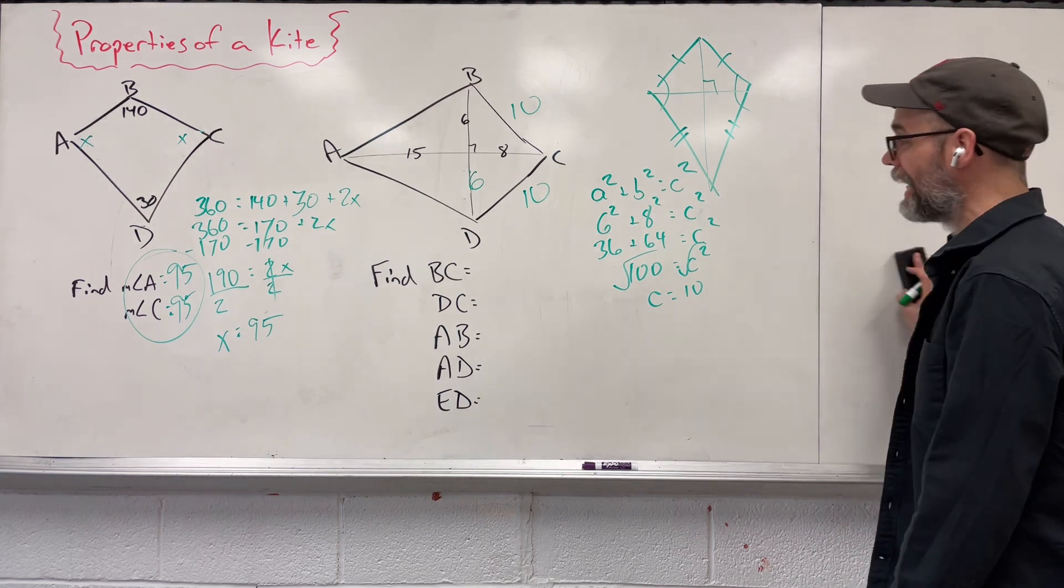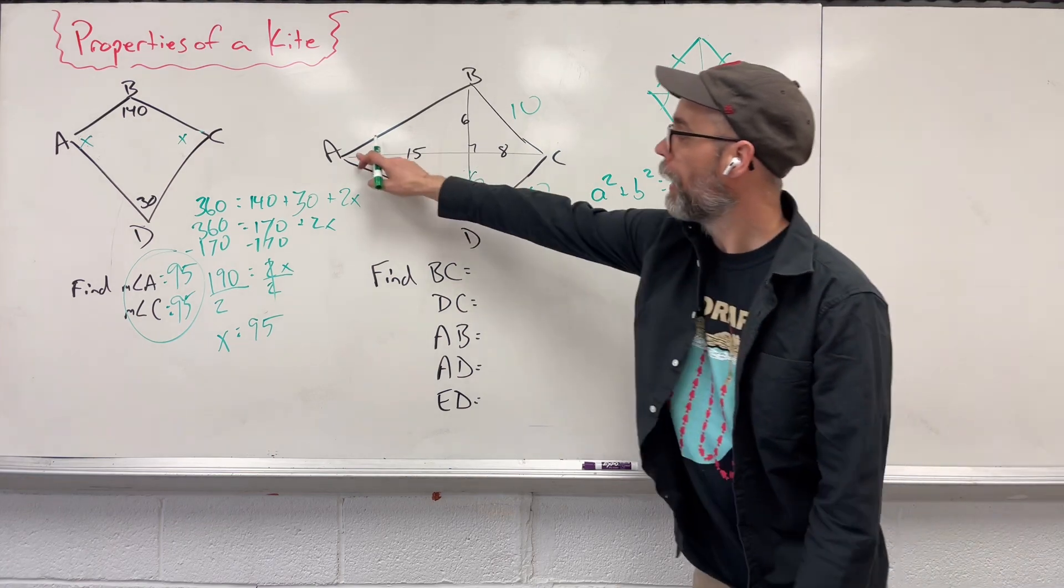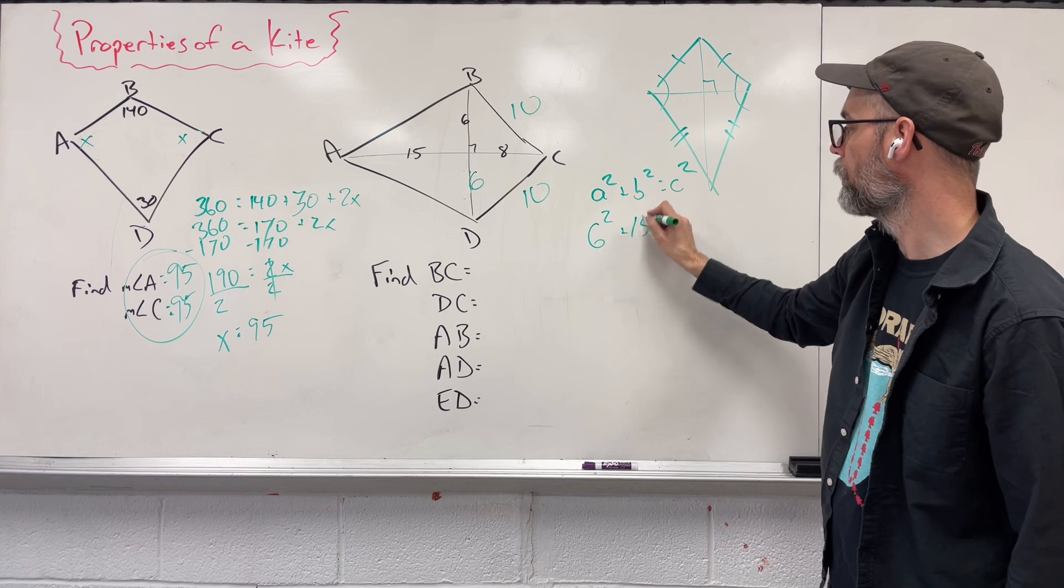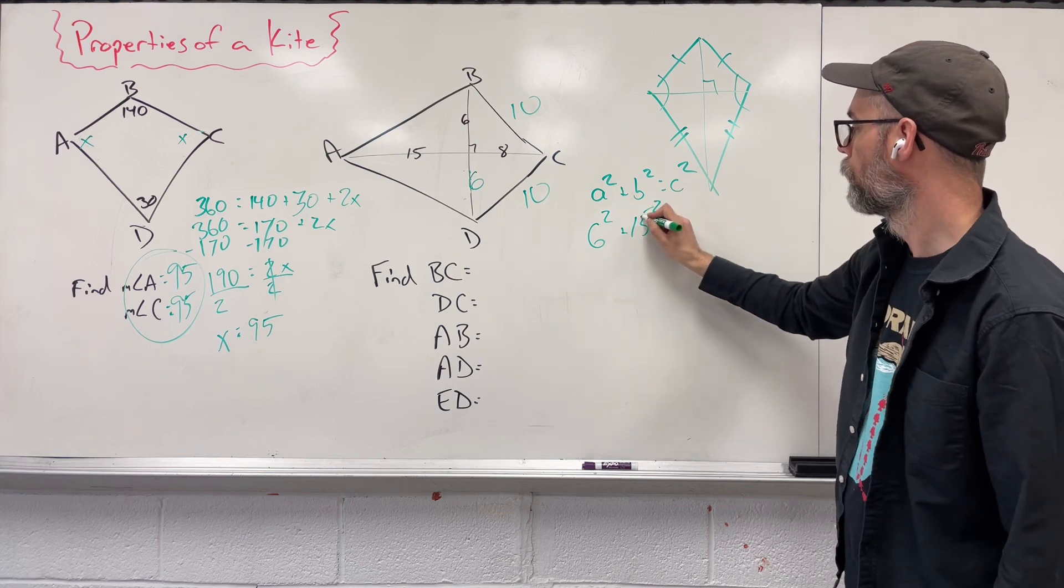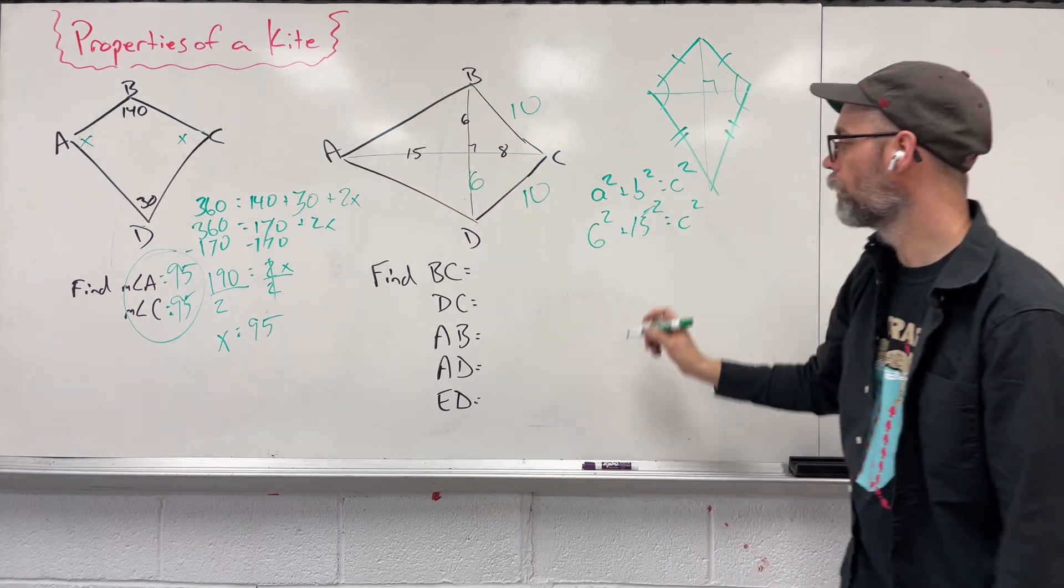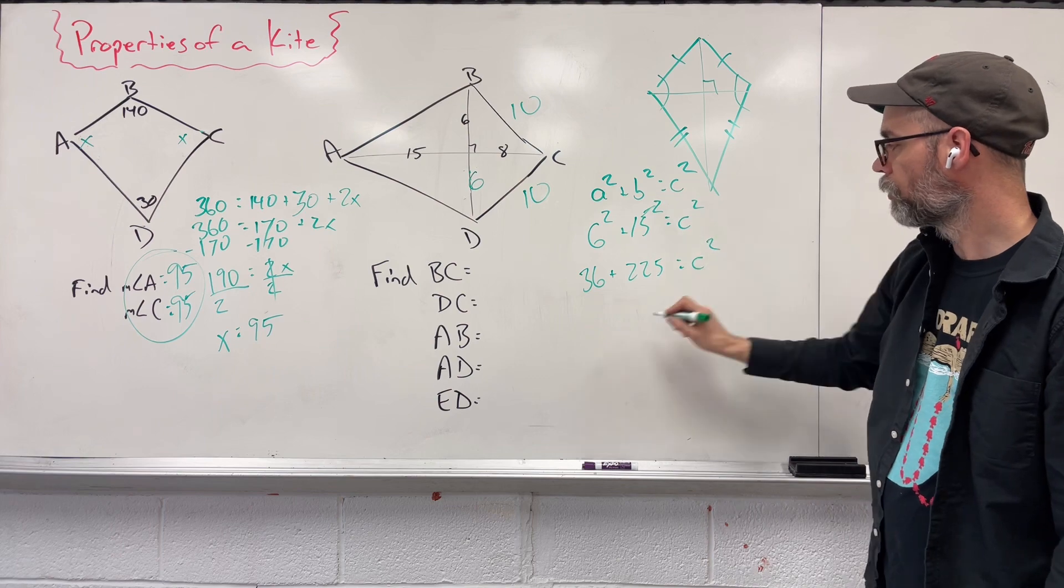We have to do the same exact thing for AB over here. We know that we have six squared. We know we have 15 squared. We have to find our missing AB. Well, we've got 36 plus 225 C squared.